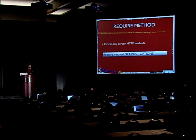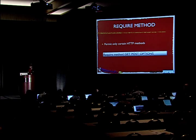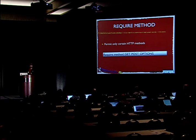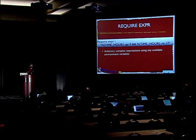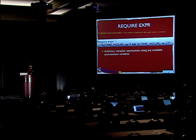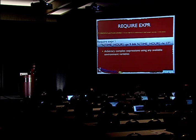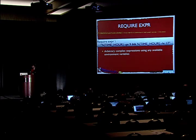Next we have mod_authz_method, which does HTTP method-based access control. In this example, 'require method GET POST OPTIONS' denies access with any other HTTP method — pretty straightforward. One of the major new features in 2.4 is the expression engine, which allows arbitrarily complex logical expressions at various places in the configuration file, including in access control. Here we have 'require expr' and then an expression about the time of day — this one denies access outside of business hours to whatever resource we're protecting.